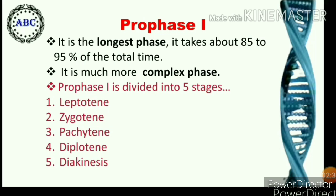Prophase I takes about 85 to 95 percent of the total time of meiosis and is a much more complex phase. It is divided into five sub-stages: leptotene, zygotene, pachytene, diplotene, and diakinesis. Several events take place in this stage, and based on these events, the sub-stages of prophase are classified.